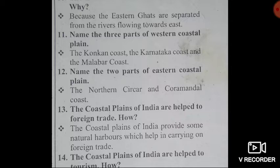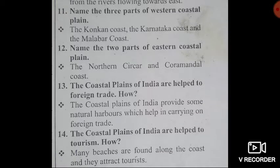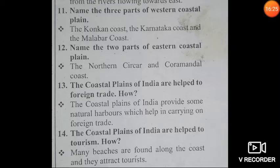Eleventh question: Name the three parts of the Western Coastal Plain. One is the Konkan Coast, second is the Karnataka Coast, and third is the Malabar Coast. Twelfth question: Name the two parts of the Eastern Coastal Plain. One is the Northern Circar and the second is the Coromandel Coast.